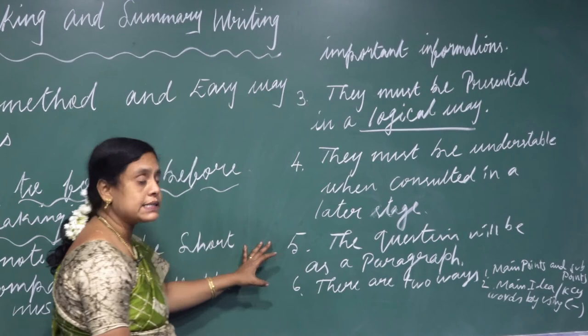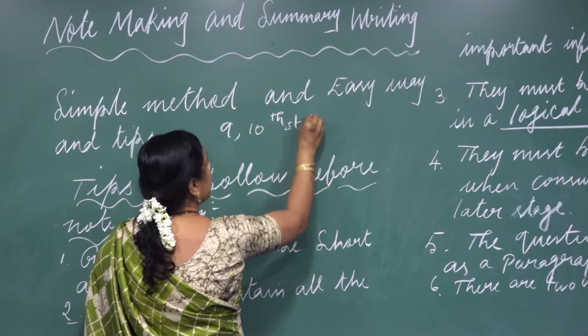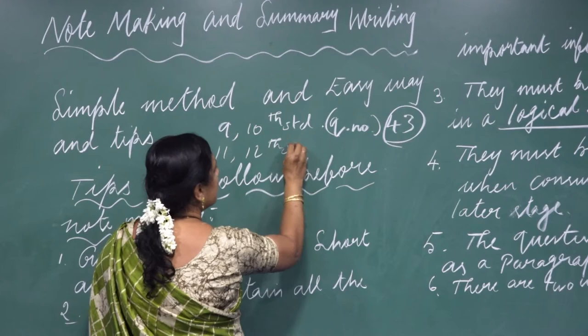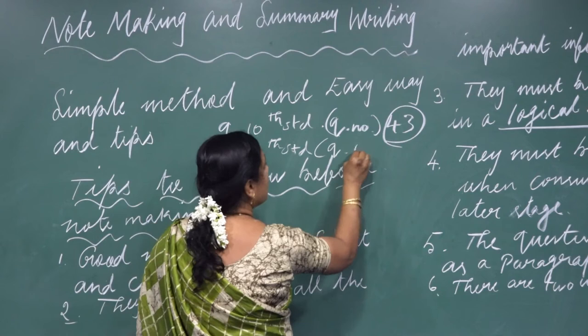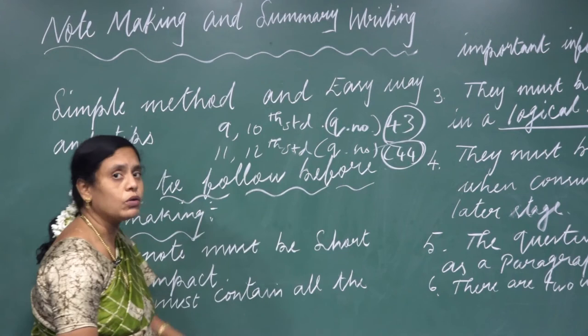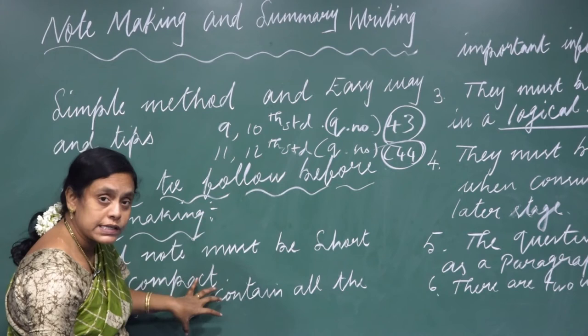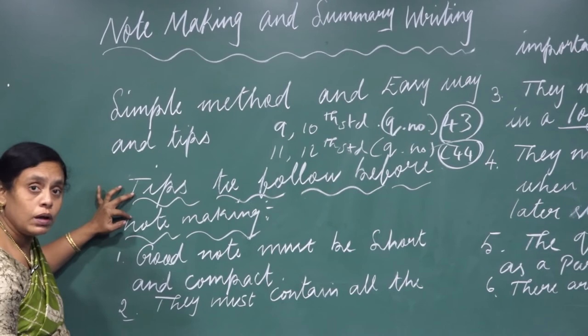For the ninth and tenth standard, the question number will be 43. For the eleventh and twelfth standard, note making and summarizing will be question number 44. During the public examination, you can score full marks in this. So you may follow these tips.